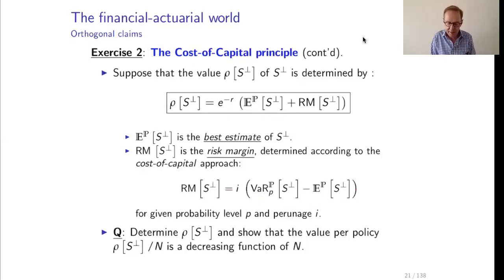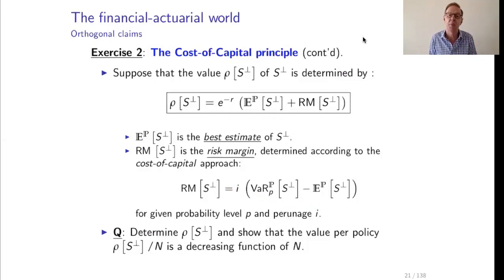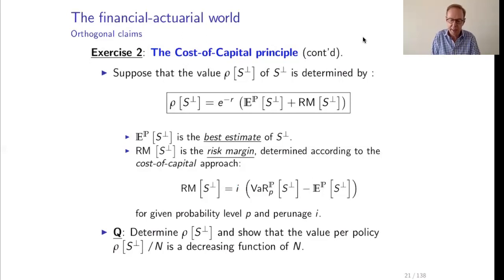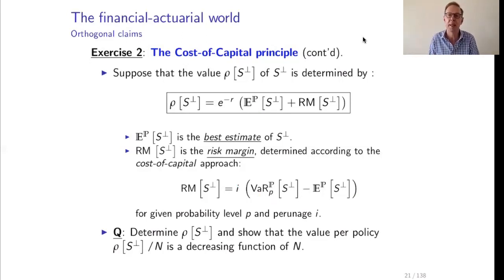This amount stays in my pocket as owner of the company, and I can even earn more if claims are smaller than the expectation. If i is 10%, we can charge a premium equal to the expectation plus only 10% of this deviation — a much lower premium is possible. But it is the shareholders, the owners of the company, who take that risk and want to be paid for it by this 10%.